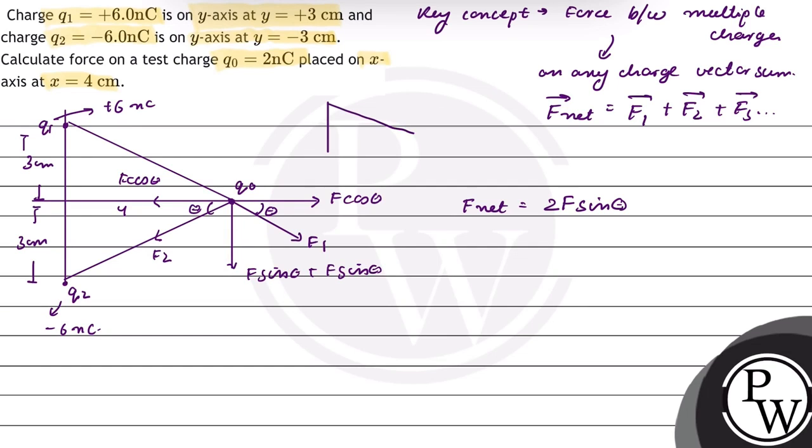Now, coming to the value of theta. On y-axis it is 3, on x-axis it is 4, and the hypotenuse equals 5. So sin theta equals 3 by 5. Force equals K Q1 Q2 upon R square into sin theta, that is 3 by 5.